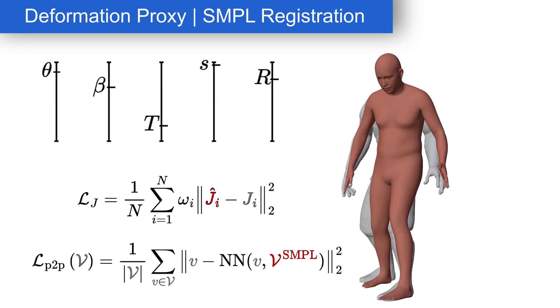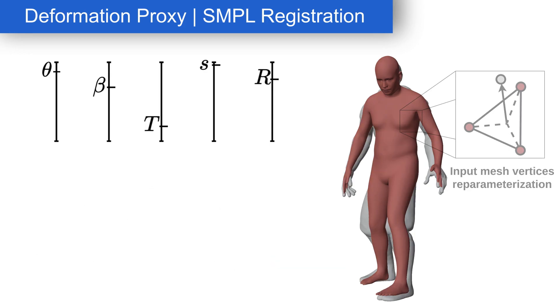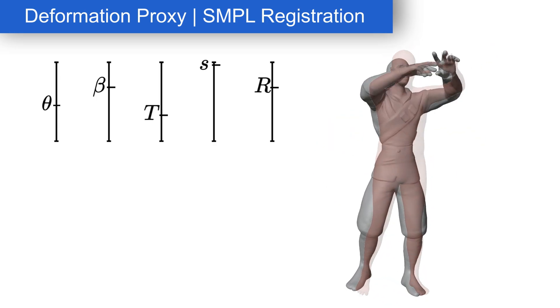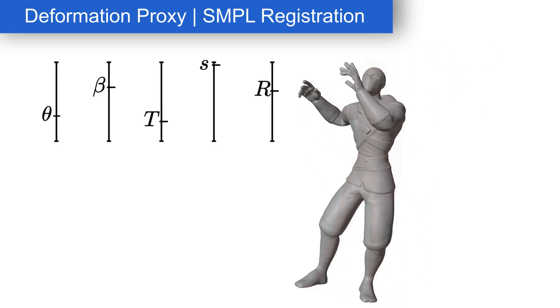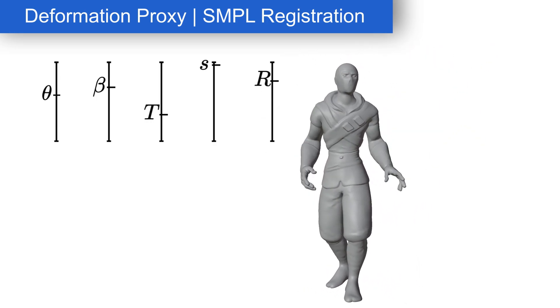After alignment, we re-parameterize the coordinates of the input mesh vertices by computing their barycentric coordinates with respect to the closest face on the SMPL mesh. This enables animation of the mesh using SMPL parameters.